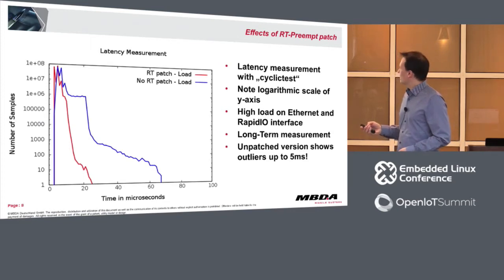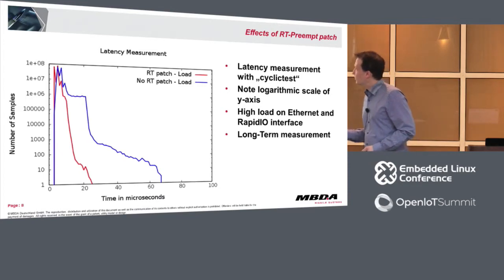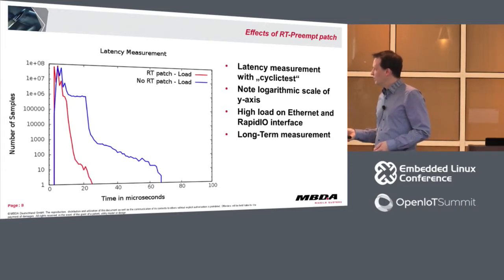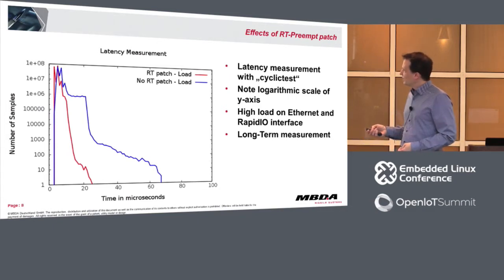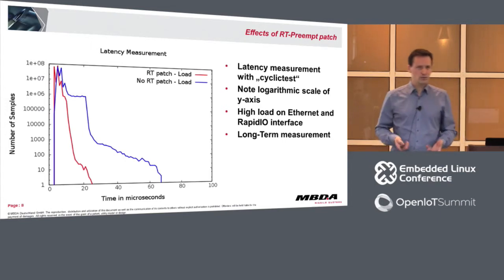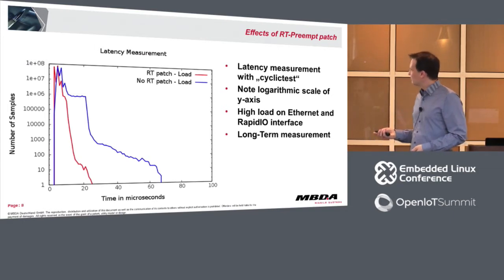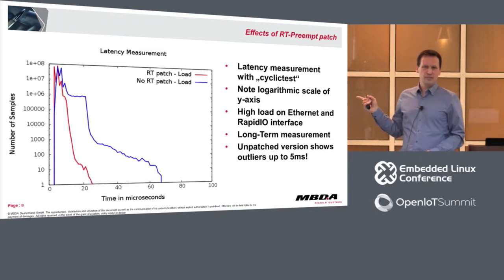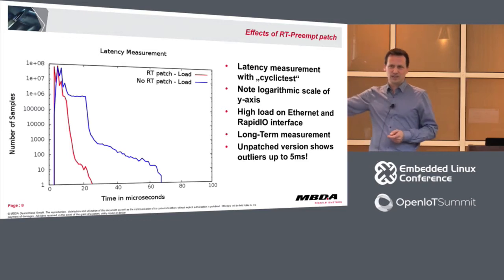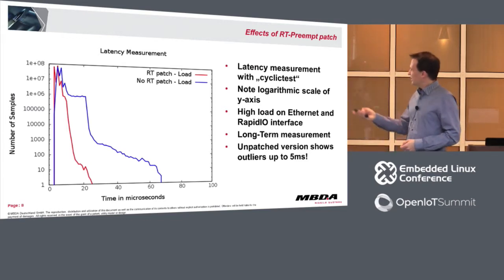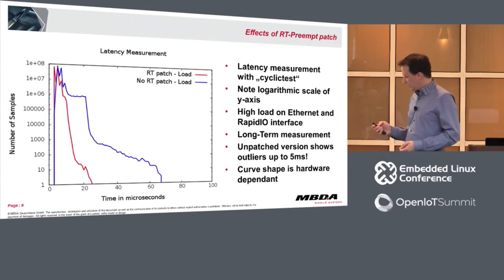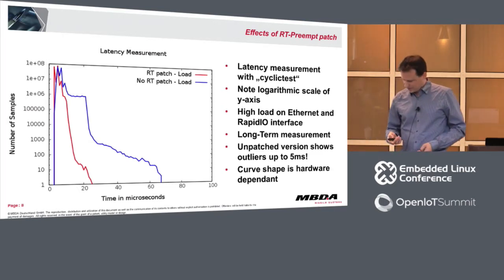The red curve is the kernel with the preempt patch — it shows a maximum latency around 25 microseconds. The blue curve is without the preempt patch, showing around 70 microseconds. But the problem is the blue curve doesn't end there — there are outliers up to 5 milliseconds. So if you plot up to 5 milliseconds, you can't see the interesting part; I cut it at 100 microseconds. This curve is totally hardware dependent. For example, with an ARM A9, the plateau extends to around 200–250 microseconds.